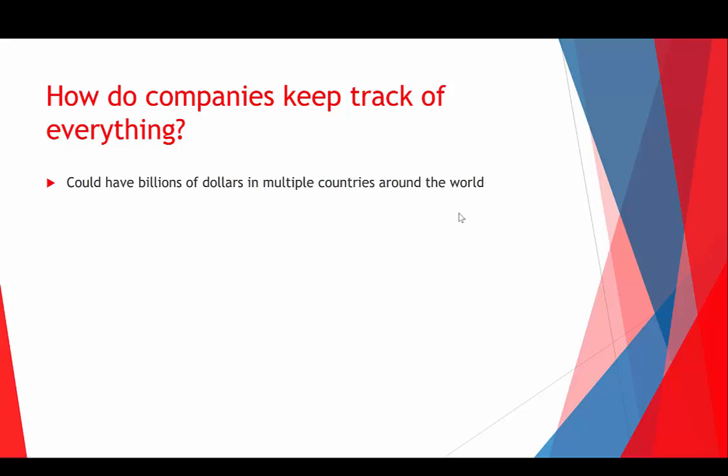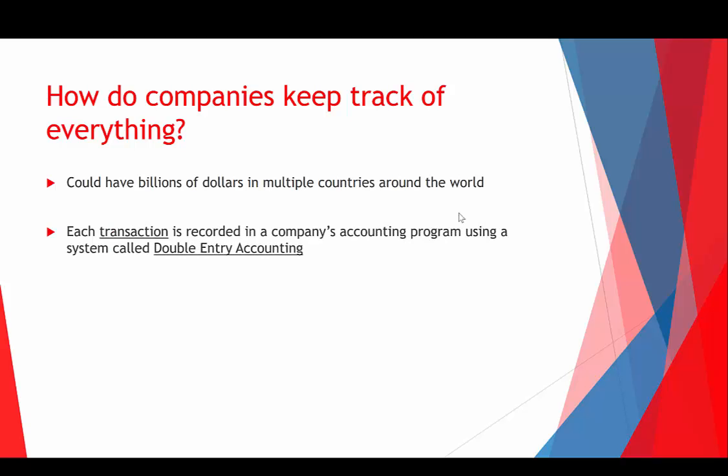Goal number two — how do companies keep track of all this, especially with billions of dollars across multiple countries? Companies use something called double entry accounting. Each transaction — which is anytime economic value is exchanged between two parties — requires an entry into at least two accounts. For example, if Boz agrees to mow a lawn for $100 in August but hasn't done it yet and no money has changed hands, that's not a transaction. But if the $100 is actually paid, that is a transaction and must be recorded.